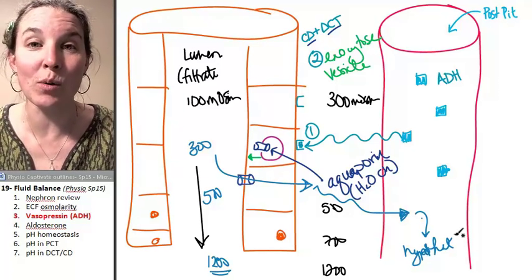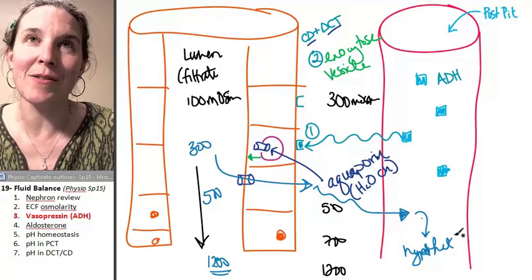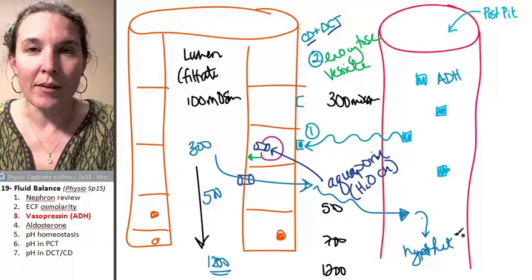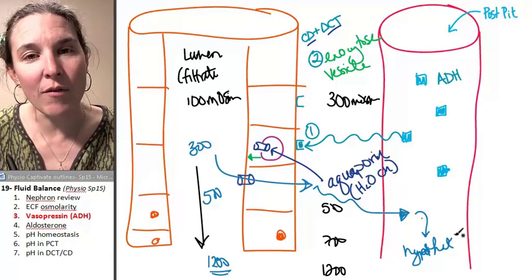No need to do anything. Hypothalamus says, I'm cool. That was a little bit of negative feedback. And we're done. That's the story. That's how vasopressin works.